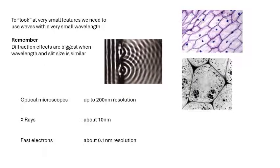If you use optical microscopes — light microscopes — the resolution, your best resolution, is about 200 nanometres. Resolution meaning the smallest distances that you can resolve between points. With X-rays, you can get to about 10 nanometres. X-rays are used to look at crystals, to gain information about crystals. This is how they discovered the structure of DNA — X-ray crystallography. But if you want to look really, really small, you need fast electrons.